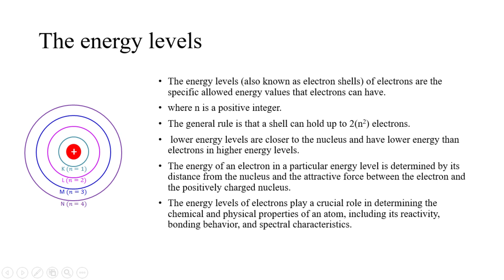Each shell can hold up to 2 multiplied by n squared, where n is a positive integer that indicates the shell order starting from 1, nearest to the nucleus. The energy of an electron in a particular energy level is determined by its distance from the nucleus and the attractive force between the electron and the positively charged nucleus. The energy levels of electrons play a crucial role in determining the chemical and physical properties of an atom, including its reactivity, bonding behavior, and spectral characteristics.